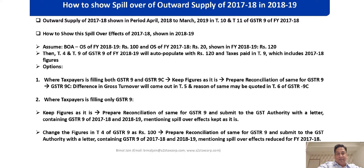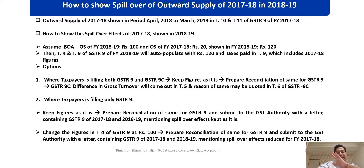Let's take an example and try to understand. Your book turnover is 100 for FY 18-19, and 20 rupees pertaining to FY 17-18 have been shown in the period April 18 to March 19 in Table 10 of GSTR 9 of 17-18. So when you pick up GSTR 9 of 18-19, your Table 4 — which gets auto-populated from GSTR 1 — will show 120, inclusive of that 20 rupees of 17-18 shown in 18-19.